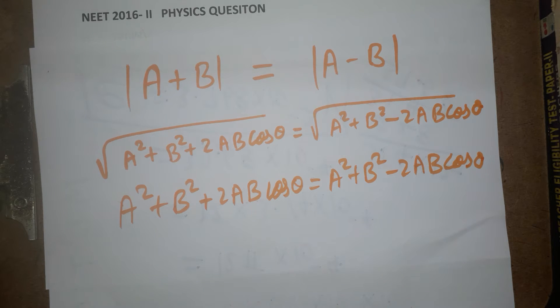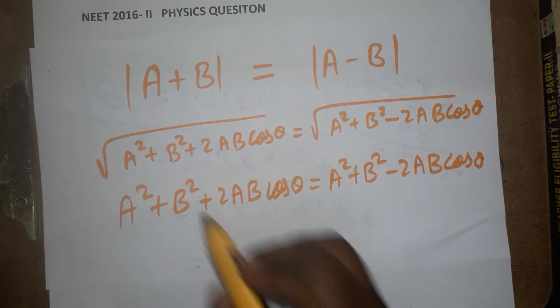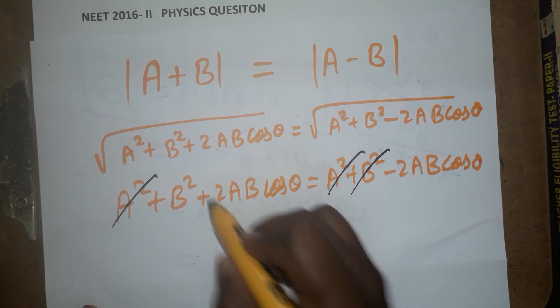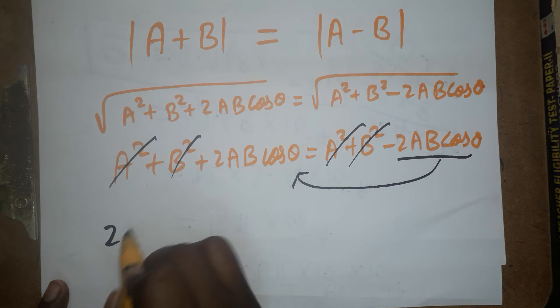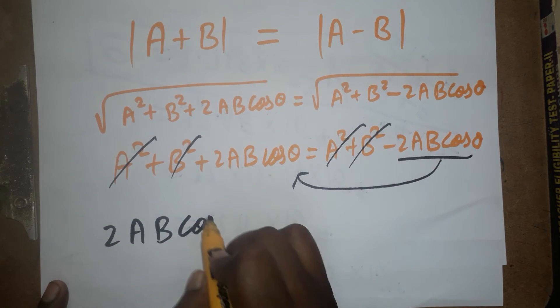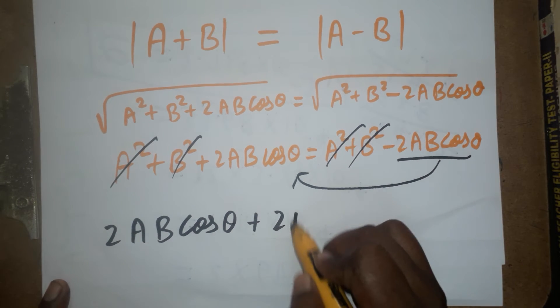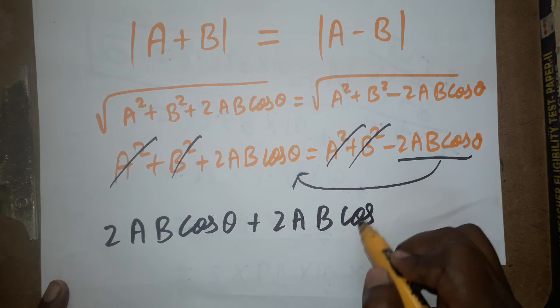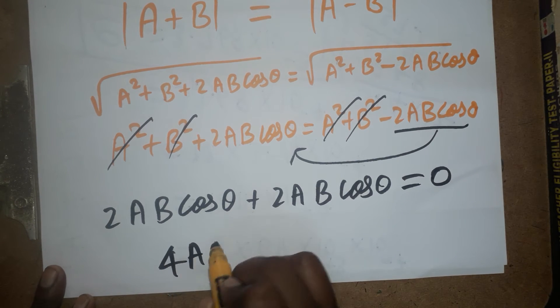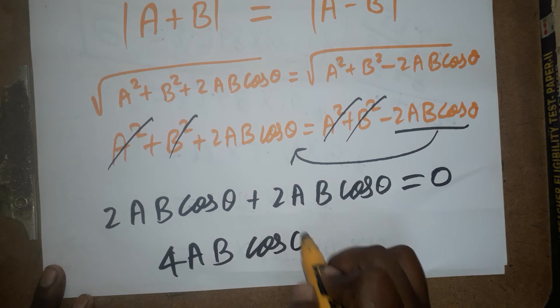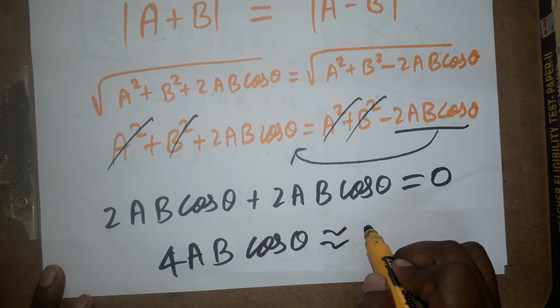Now, constant terms you should cancel. So what is the constant term? a square, a square, b square, b square. It is going to cancel. Minus 2ab, I am bringing this side. So 2ab cos theta plus 2ab cos theta is equal to how much? Zero. 2ab, 2ab, 4ab cos theta. 4ab cos theta is equal to approximately equal to zero.